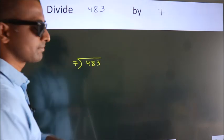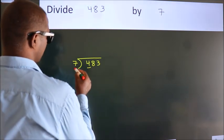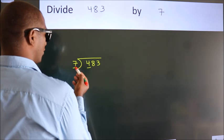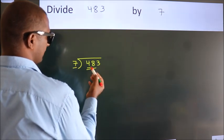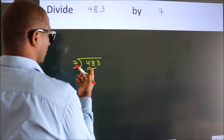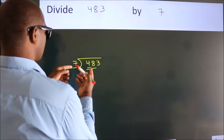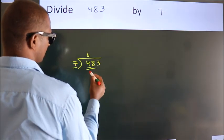Next, here we have 4 and here 7. 4 is smaller than 7, so we should take 2 numbers: 48. A number close to 48 in the 7 table is 7 times 6, which is 42.